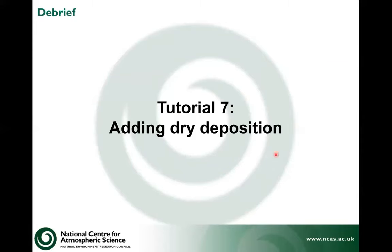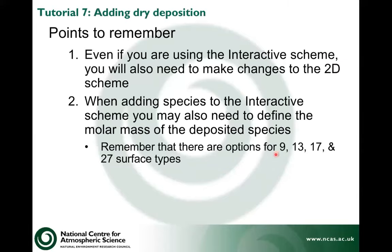A little debrief: points to remember here — even if you're using the interactive scheme, you need to make changes to the 2D scheme, because UKCA expects there to be both. When adding species to the interactive scheme, you need to define the molar mass. You also need to remember that there are options in the interactive scheme for different surface types: 9, 13, 17 and 27 at the moment. These routines can be rather complex because of this.